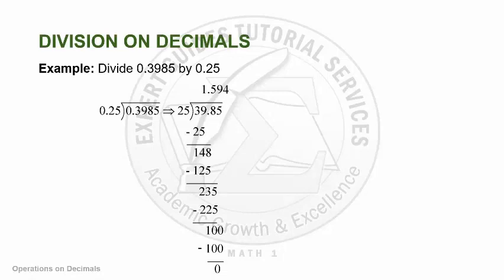Notice also that this will only work if your divisor is a decimal number. Suppose you have 0.3985 divided by 25 — you don't have to move the decimal point anymore because your divisor is already a whole number. The key point is that we don't want to divide with a decimal divisor, which is why we move the decimal point. But if your divisor is already a whole number, regardless of whether your dividend is decimal or not, you can divide as is. What matters is that the divisor is not a decimal.